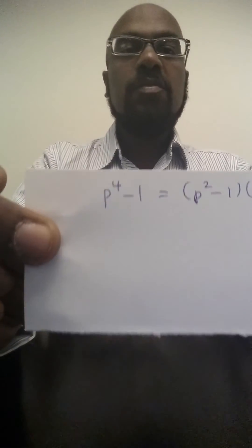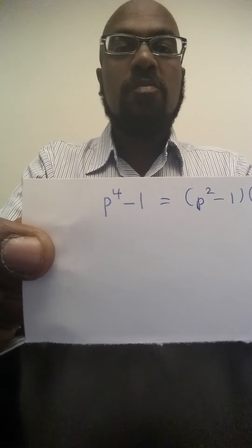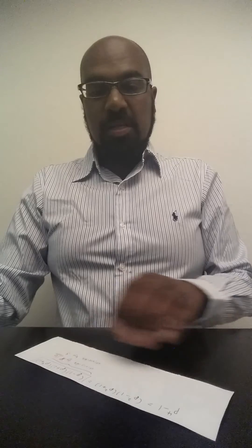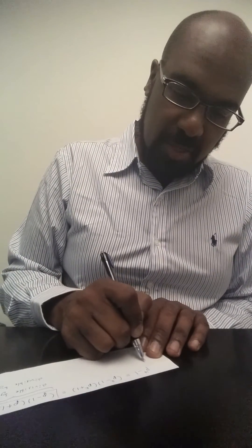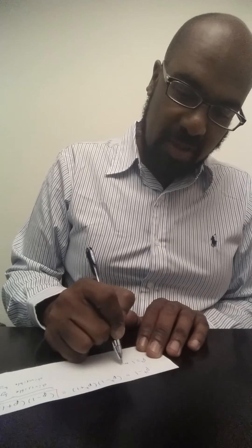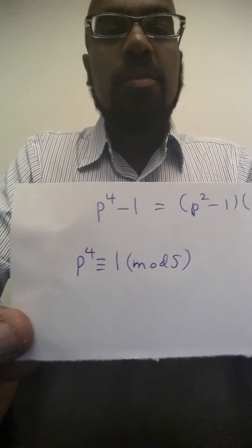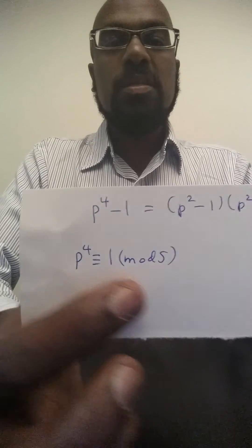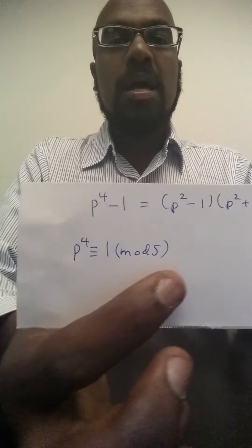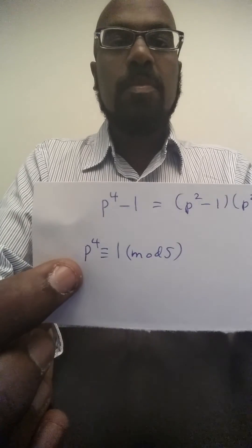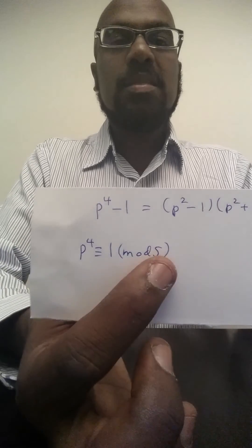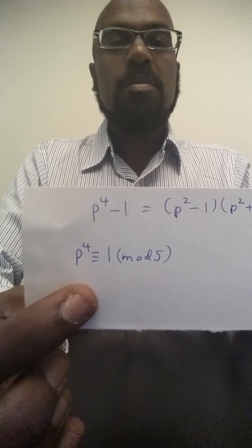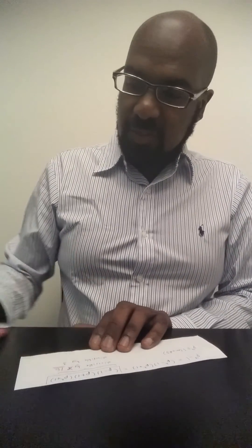If we take a look at this expression, p to the fourth minus 1, since p is a prime greater than 5, p to the fourth is congruent to 1 mod 5 by a little theorem called Fermat's little theorem. Fermat's little theorem says that an integer that is coprime with a given prime number when raised to the power of 1 less than that prime number is 1 mod that prime number. So this expression is also divisible by 5.